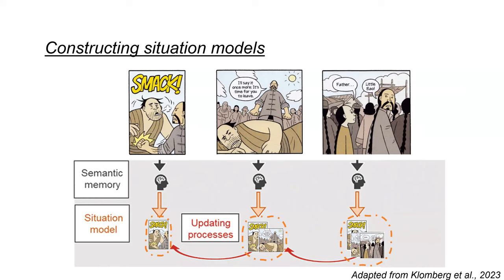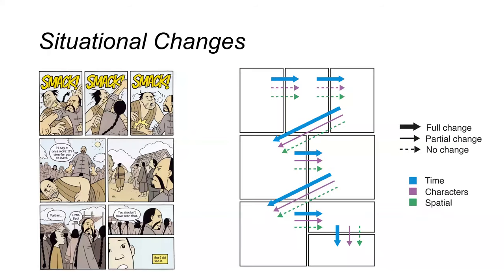A situation model is a constructed mental representation of a discourse integrated with the reader's prior knowledge. So readers should first recognize the elements in a panel, then extract information through attentional selection. These extracted information can connect to semantic representations encoded in our semantic memory, and they feed into the situation model of the ongoing scene. As a reader encounters new information, such as a new character or location, the created situation model becomes updated and inferences are made upon them.